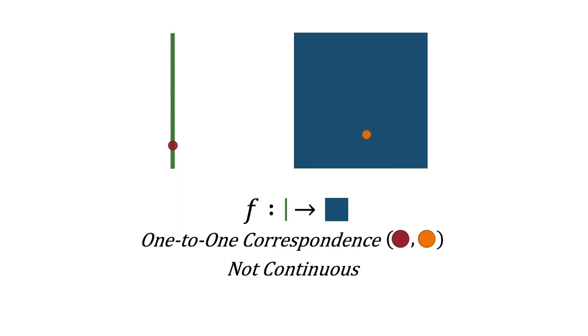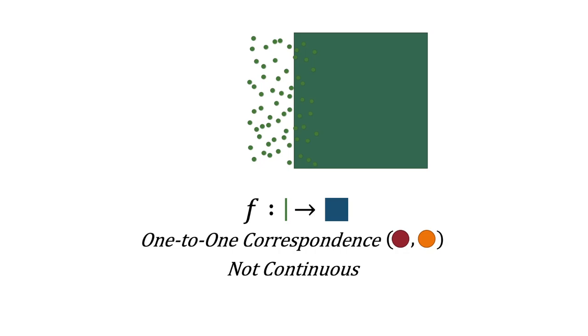By being discontinuous, Cantor's function is as if you cut the line segment into a bunch of tiny points and then covered the square with those points. This raises an interesting question: is there a way to map the line segment to the square continuously? In fact, there is. Giuseppe Peano, in response to Cantor's discovery, found a way to do so. He began by stretching the line segment to cover a portion of the square.